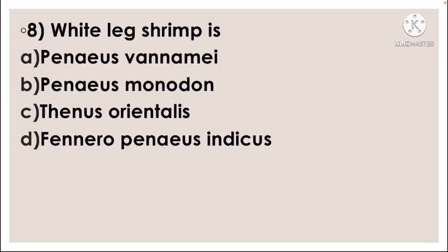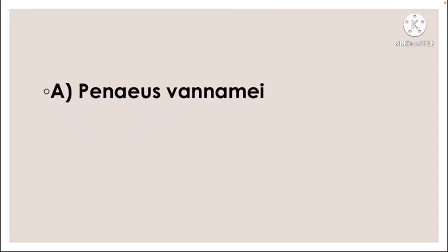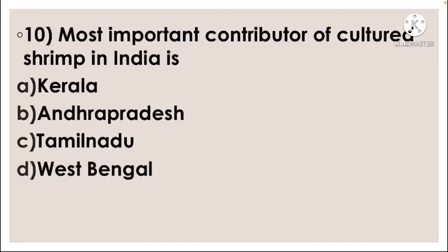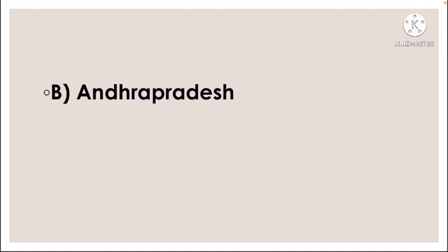Next question: White leg shrimp is — option A Penaeus vannamei, option B Penaeus monodon, option C Thinnus orientalis, option D Fenneropenaeus indicus. Next question: Most important contributor of cultured shrimp in India is — option A Kerala, option B Andhra Pradesh, option C Tamil Nadu, option D West Bengal. Correct answer: option B, Andhra Pradesh.